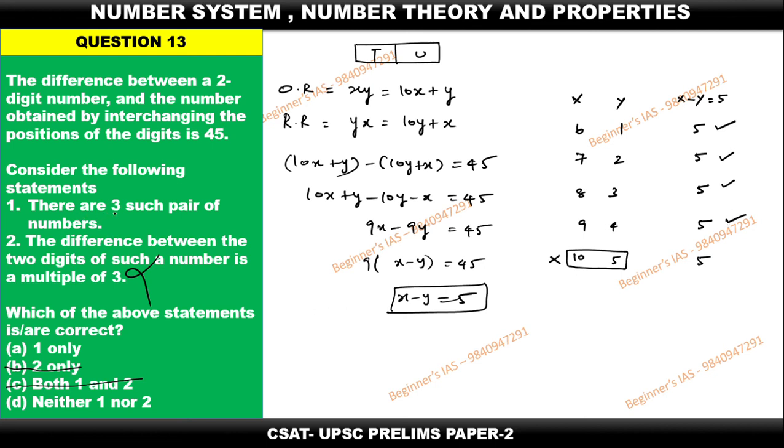Here it is given that there are 3 such pairs of numbers. No, here 4 such pairs of numbers. Therefore this statement is also wrong, which means the answer for this question is neither 1 nor 2. If you are having any doubts you may clarify in the comment section. Thank you all, have a good day.